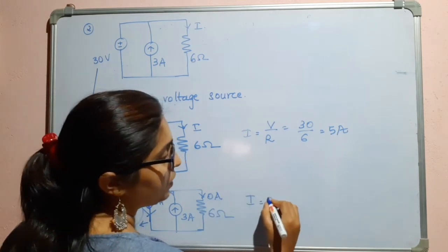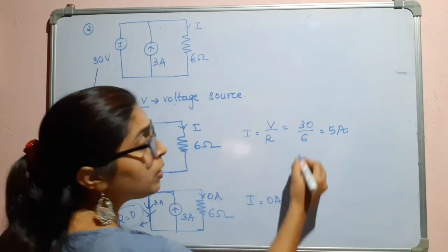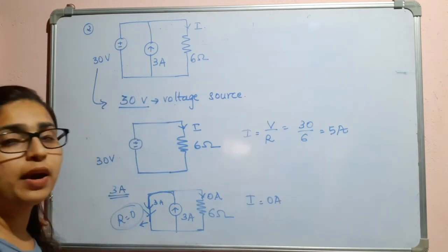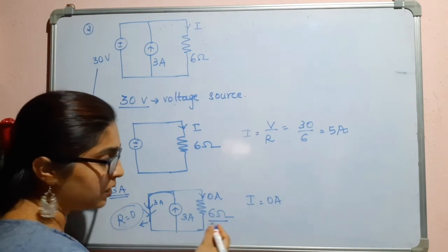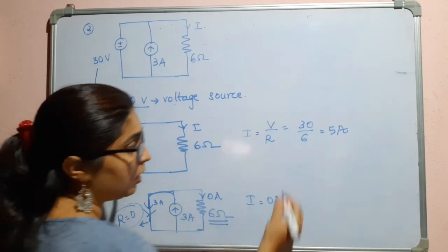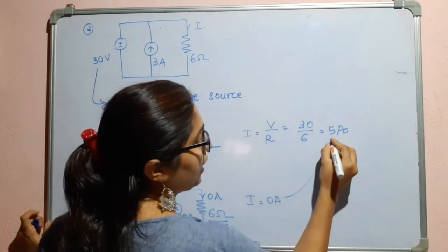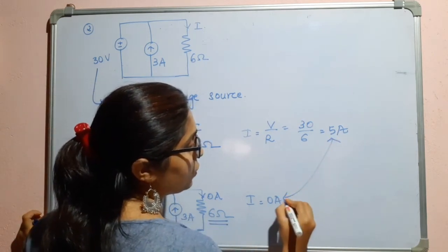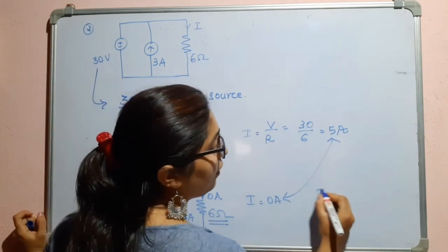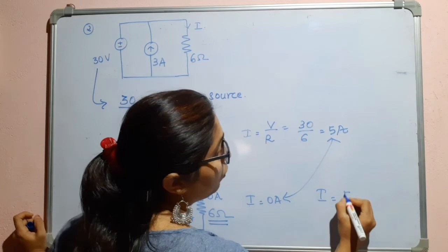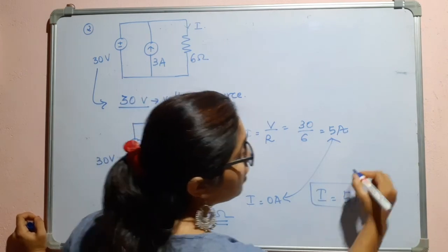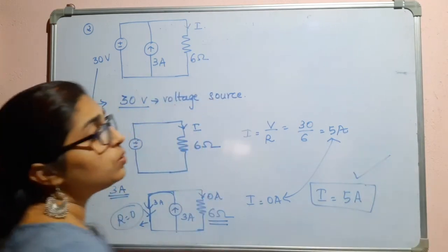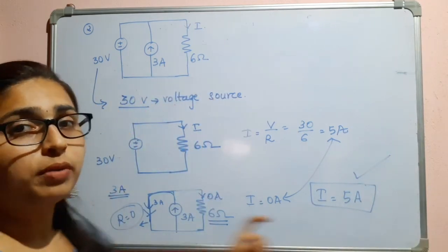So the current through the 6 ohm resistor due to the current source is 0 amperes. To find the total current through the 6 ohm resistor, we take the sum of both contributions: 5 + 0 = 5 amperes. This is the total current through the 6 ohm resistor.